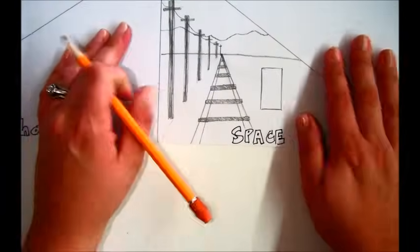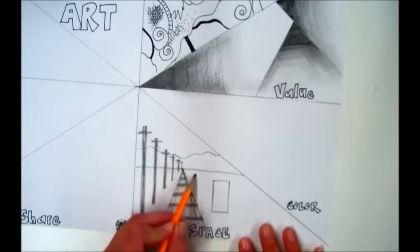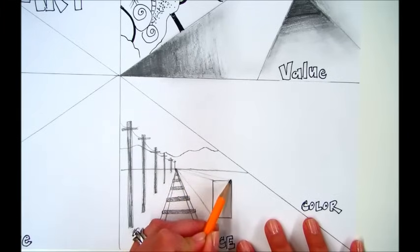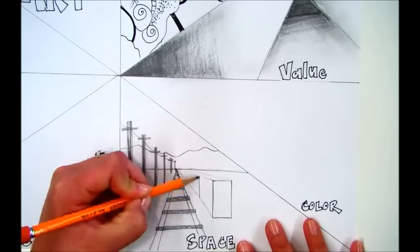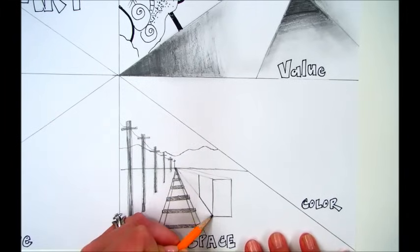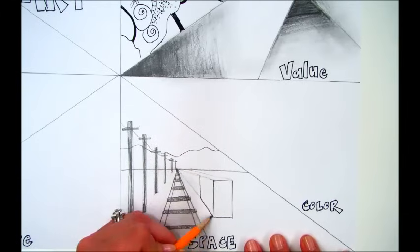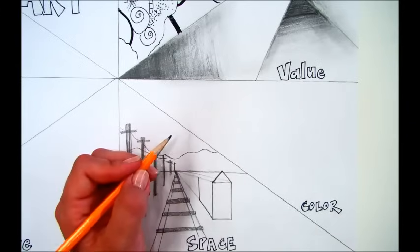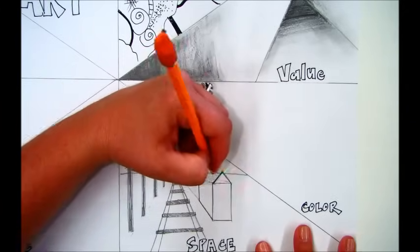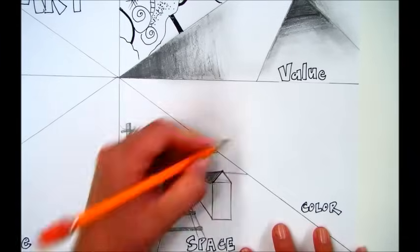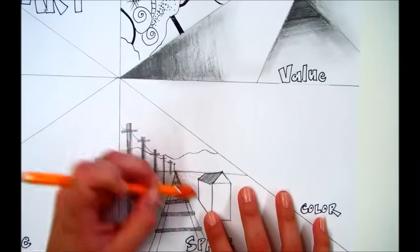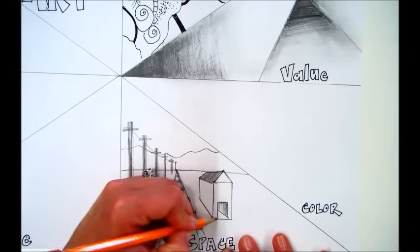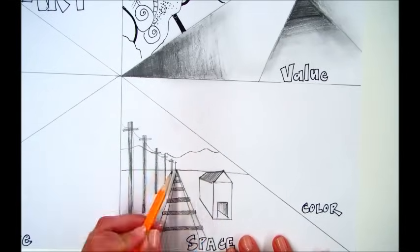Next, we're going to draw a structure to the right of the railroad track. Start by drawing a square or a rectangle. And then converge some lines from the corners of that square or rectangle to the vanishing point. And then draw in the side of your building. Then you can draw in a rooftop. And erase your extra lines. And then draw an opening or a doorway.